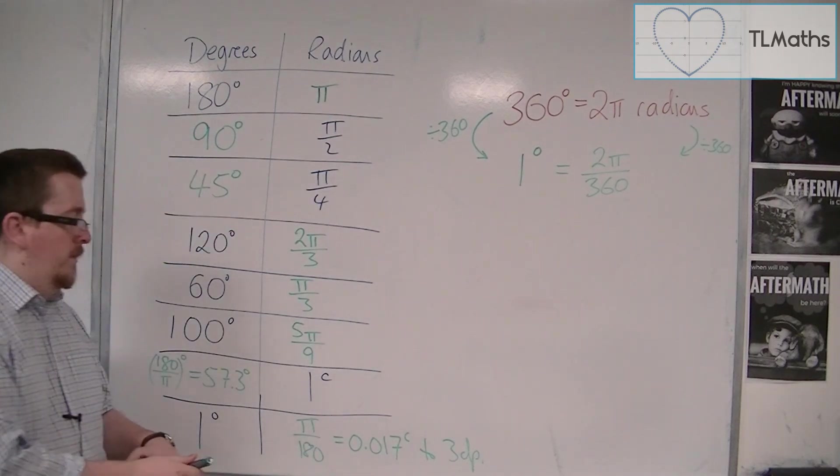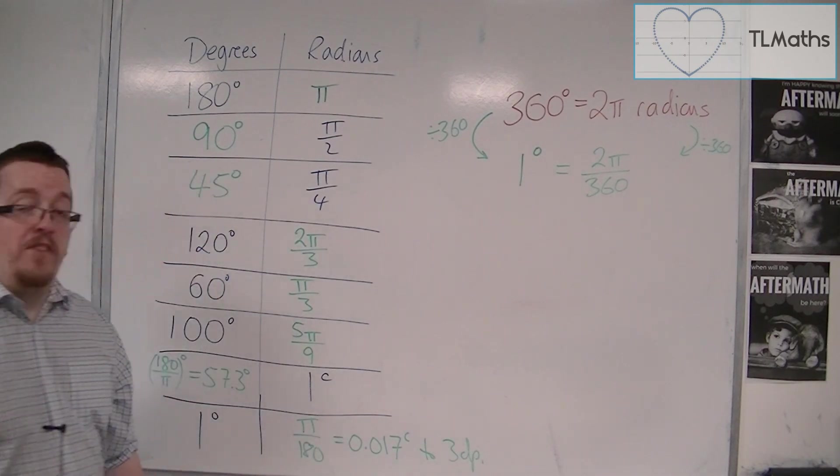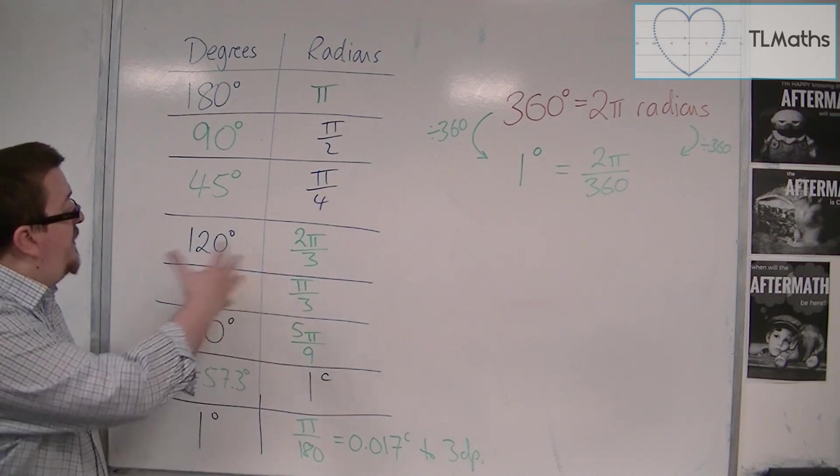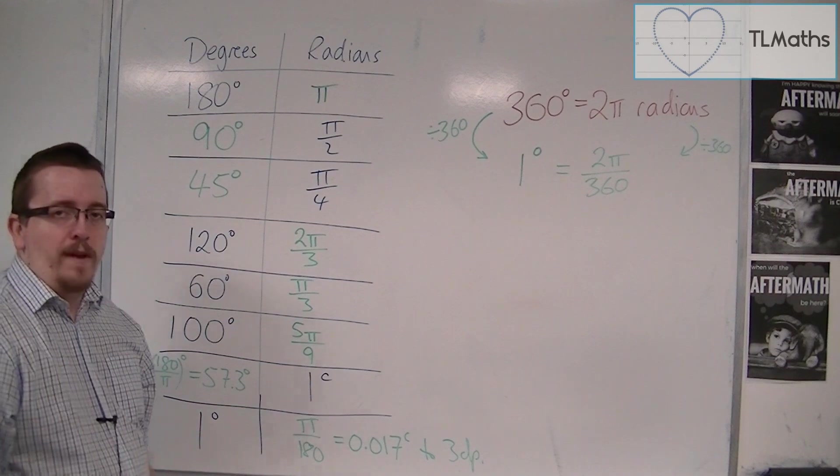So, it's actually 0.017 of a radian is 1 degree. And this is how we can convert between degrees and radians.